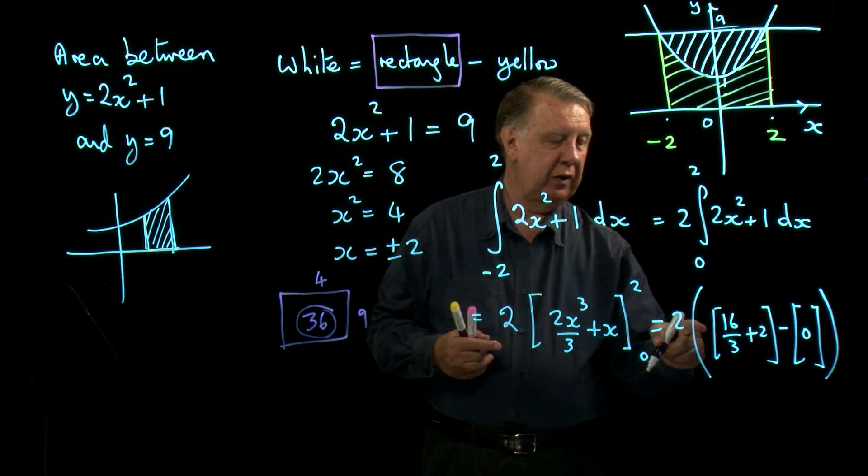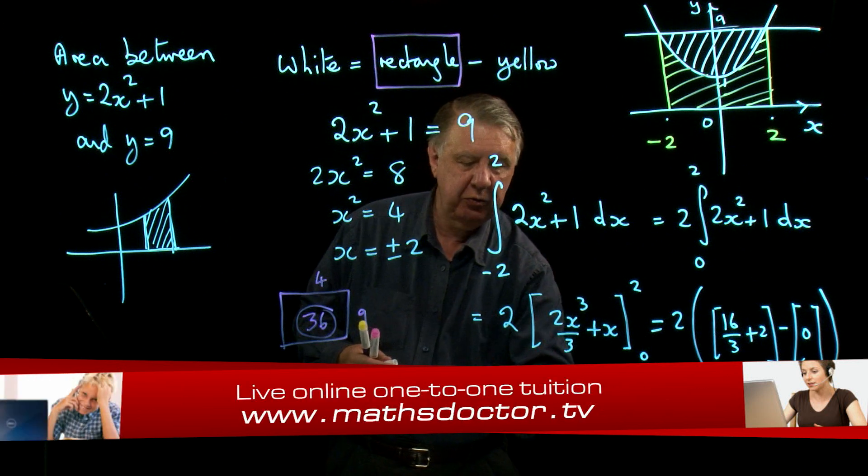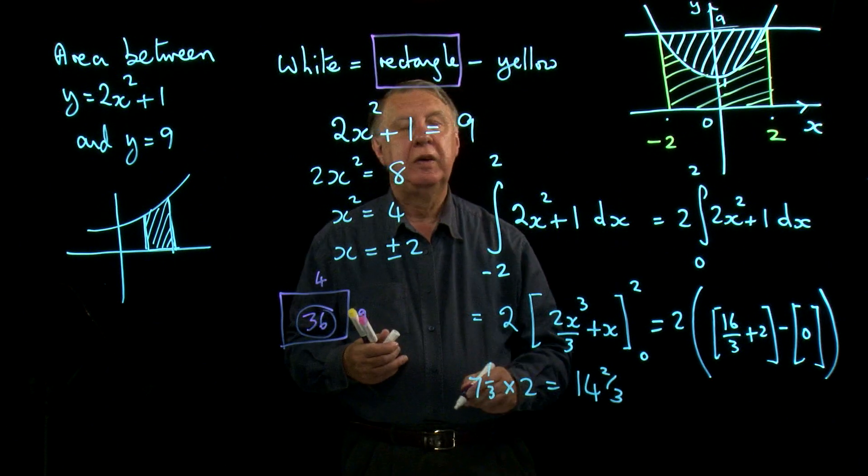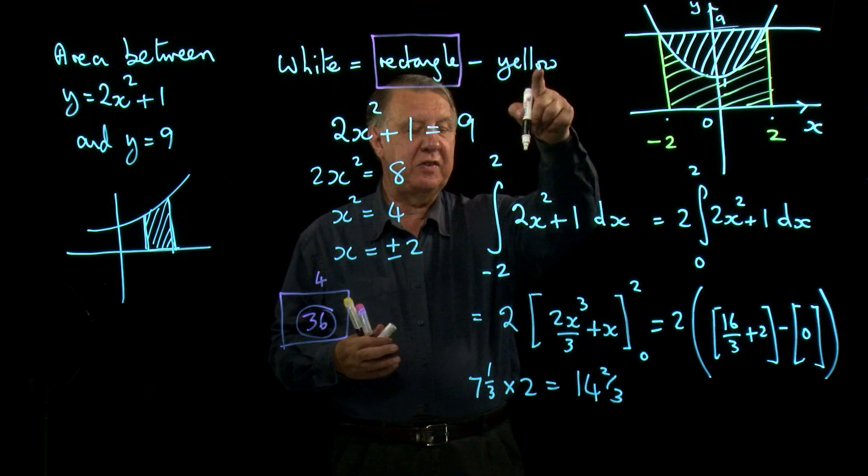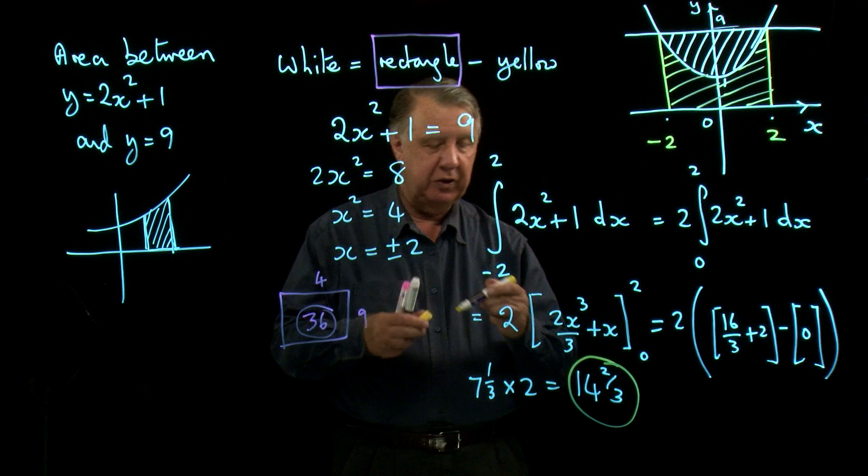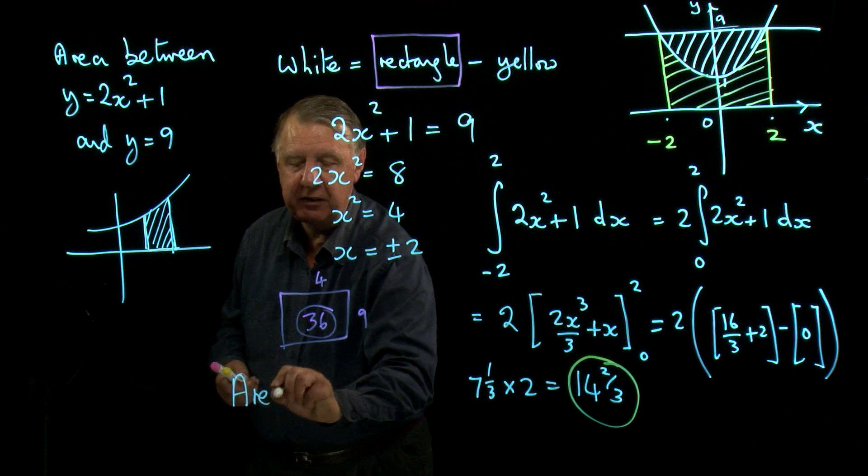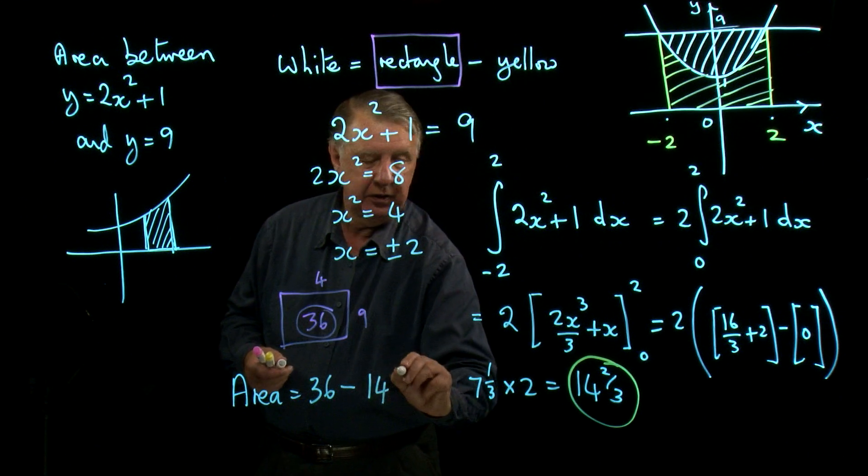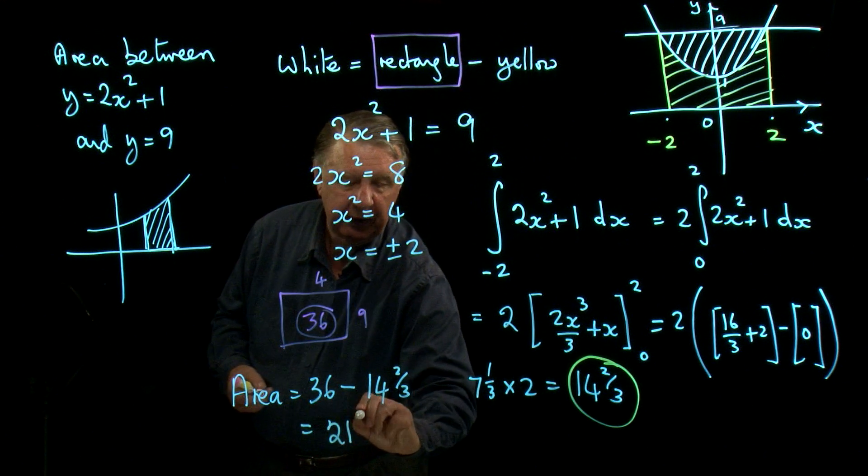So finally then the answer will be 16 over 3, that's 5 and a third plus 2, which is 7 and a third times 2, 14 and 2 thirds. Now for goodness sake don't write that down as the answer, because that's not the answer. That's just the yellow region here. So to get the final answer, the area required will be the area of the rectangle, which is 36, take away 14 and 2 thirds, which is 21 and a third.